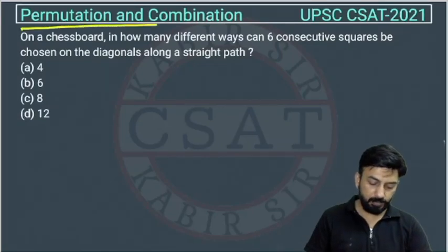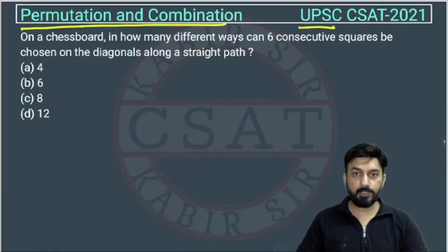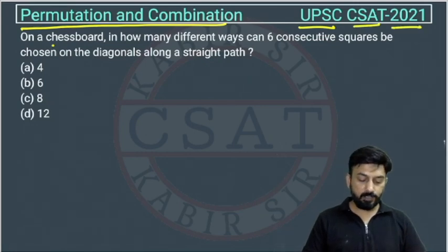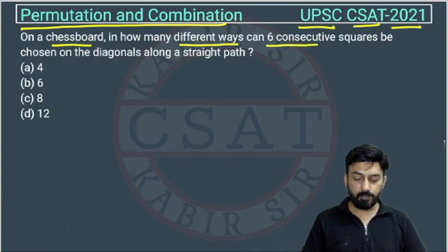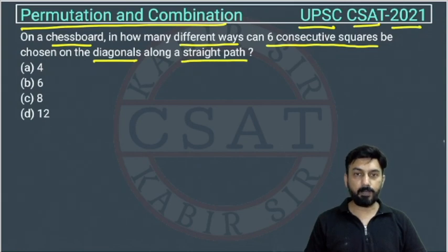This is a question from Permutation and Combination chapter asked by UPSC in CSAT paper of 2021. On a chessboard, in how many different ways can 6 consecutive squares be chosen on the diagonals along a straight path?